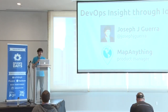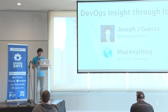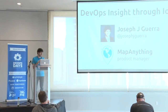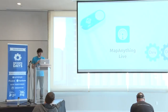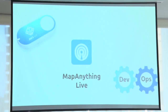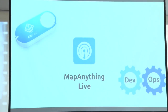Hi everyone. I'm Joe Guerra, and I'm a product manager at MapAnything. MapAnything makes software to take all of your business data in Salesforce.com and put it on the map. We're located right here in Charlotte. I want to talk to you during this Ignite about how I use the Amazon IoT button to help me learn more about a MapAnything IoT product and how that relates to DevOps.